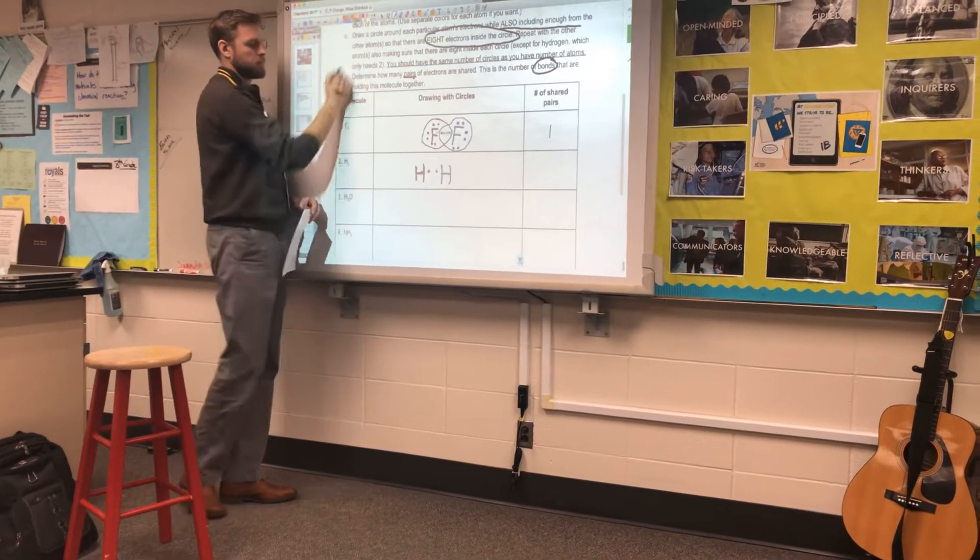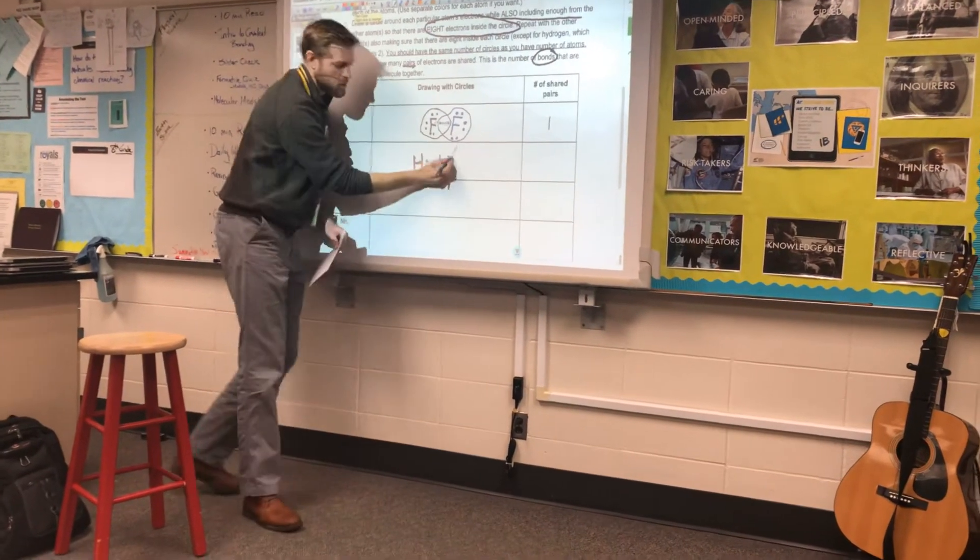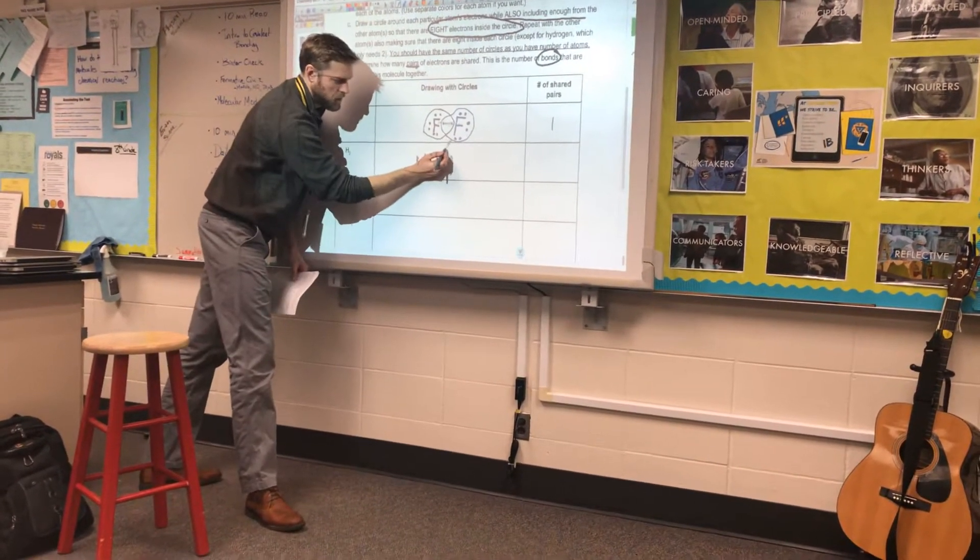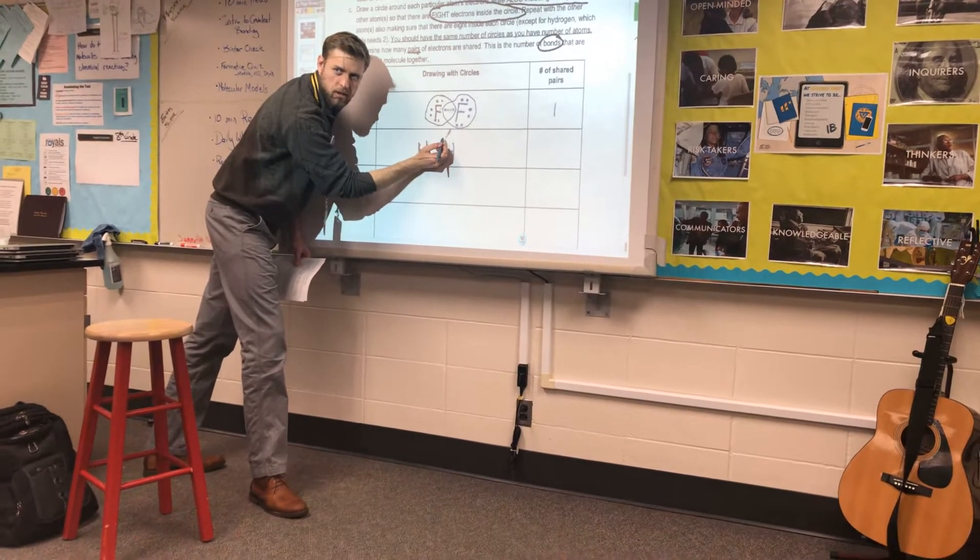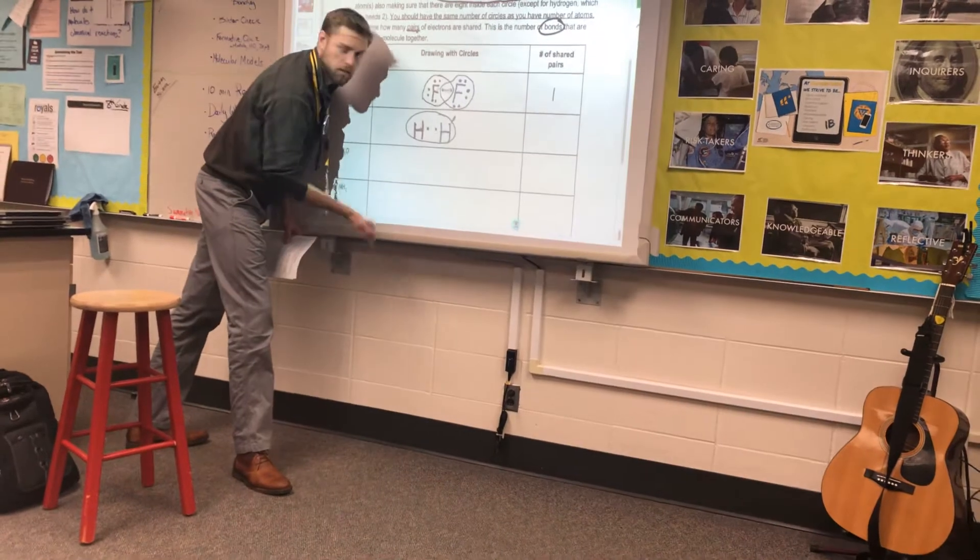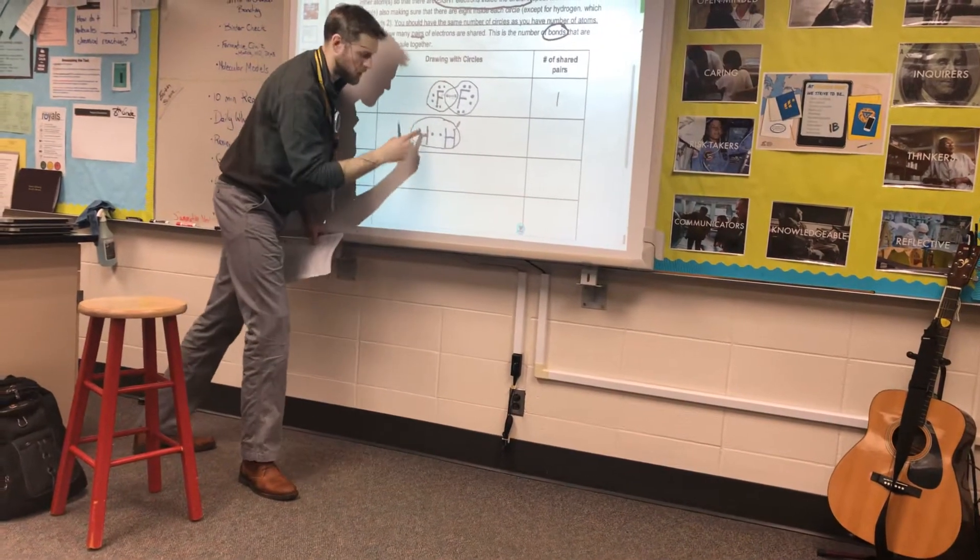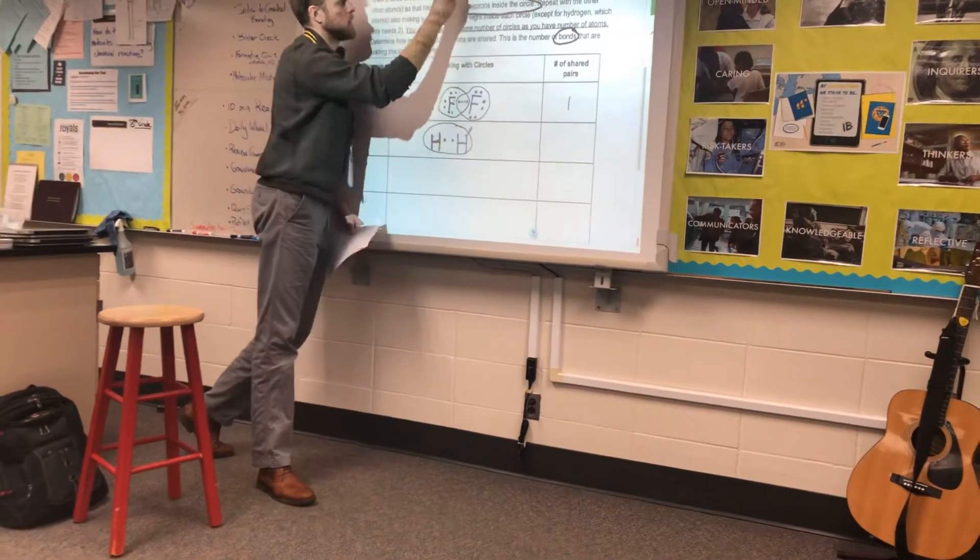Hey, quick question. When I draw the valence shell for this hydrogen, how many nucleuses can I have in the middle of that valence shell? One. Just one, right? Would this be legitimate? No. You see the problem? There's two nucleuses in there. That's no bueno.